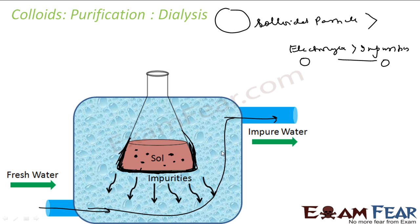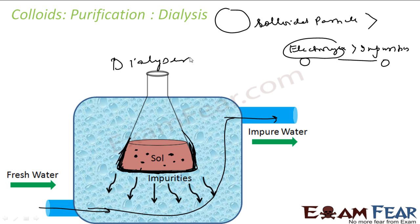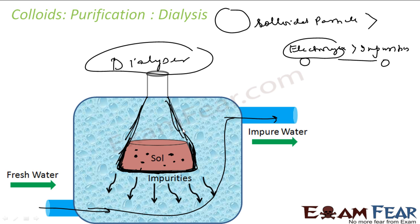This works because electrolytes and ions are smaller than the colloidal particles, so they pass through. The apparatus used to purify a colloidal solution by dialysis is called a dialyzer. It is essentially a bag of suitable membrane suspended in a vessel.